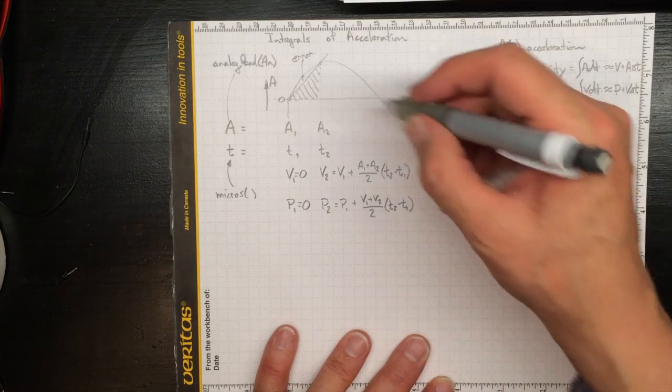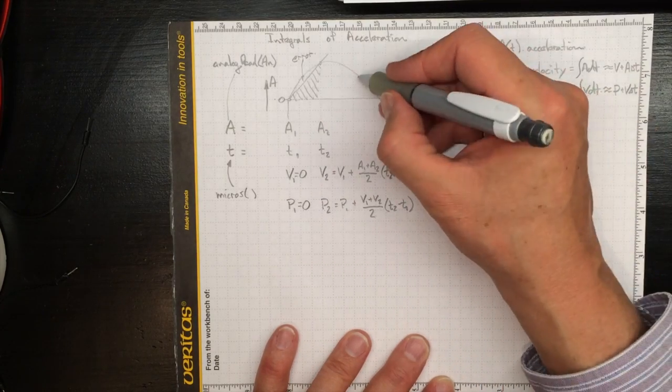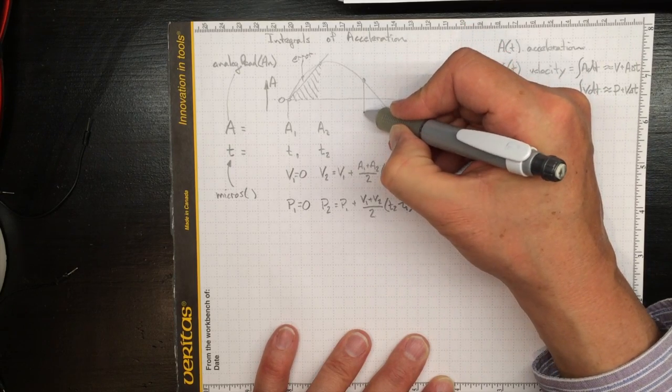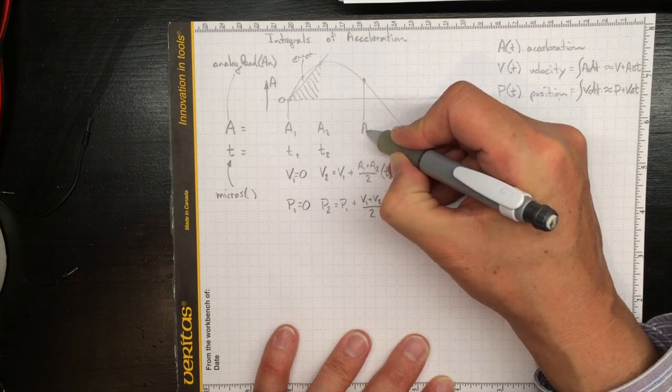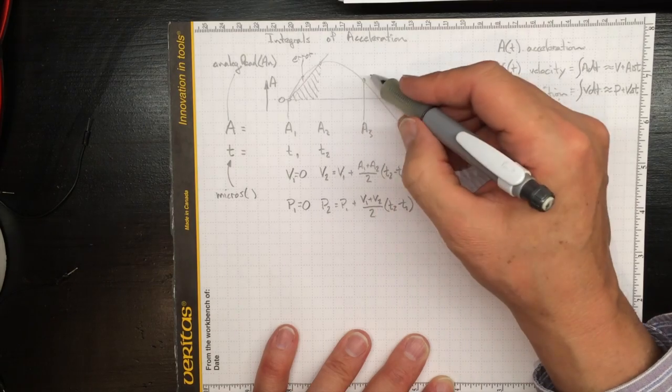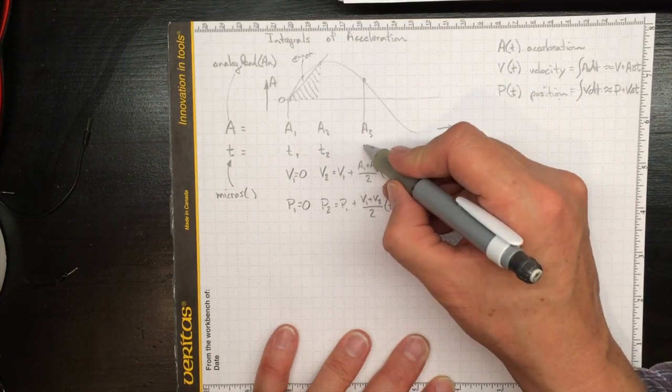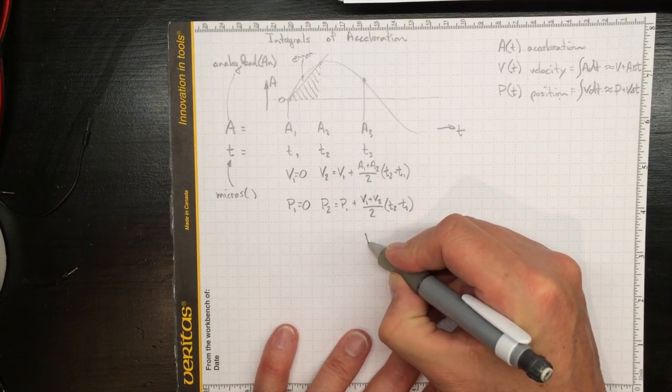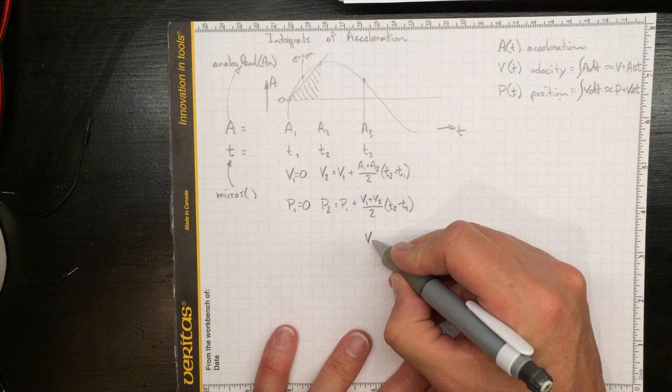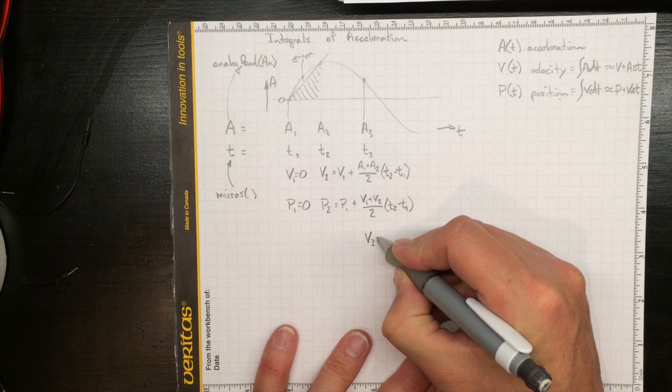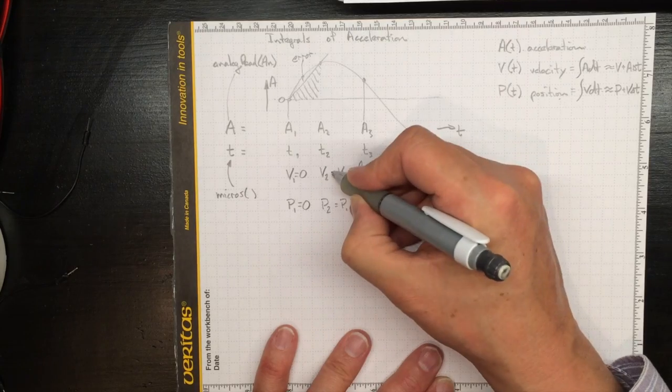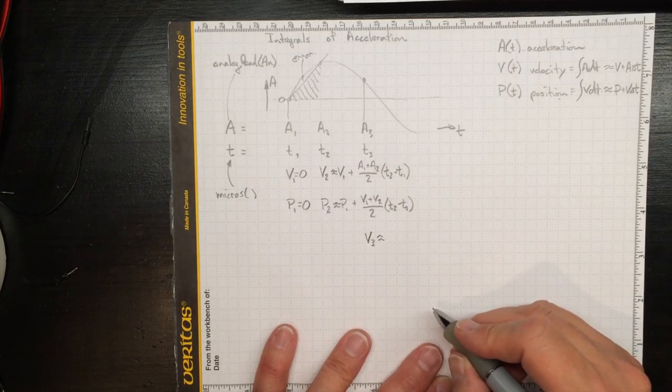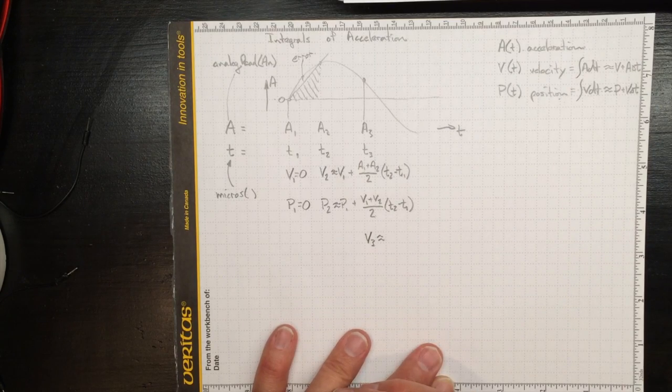And next we might go on and say that here's a second location, a2, or a3 rather, a third location. And we can find out what the time is at t3. We can calculate an estimate for v3. Let's make all of these approximation signs because we know we're just guessing. We're trying to get close.